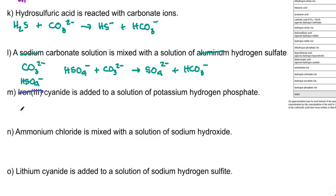Okay, iron, metal, don't care. Cyanide is added to a solution of potassium, metal, don't care. Hydrogen phosphate, which is HPO4 2 minus. HPO4 is a pretty wimpy acid, but it is stronger than water, so that's our strongest acid. And cyanide is our strongest base. So from that we will get phosphate ions and hydrocyanic acid.